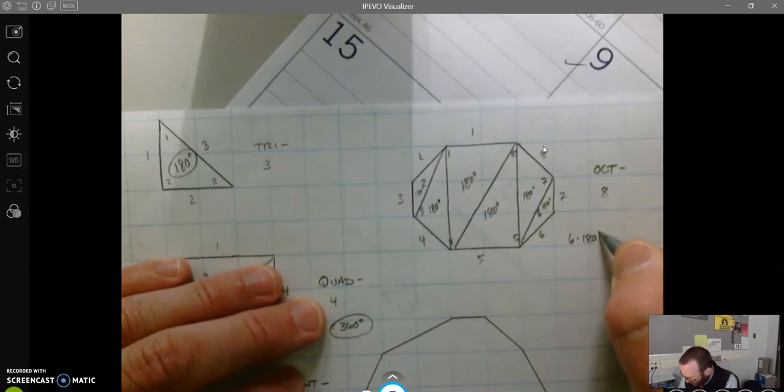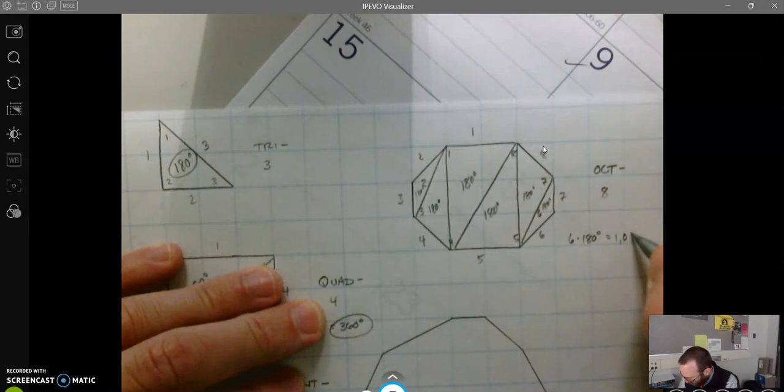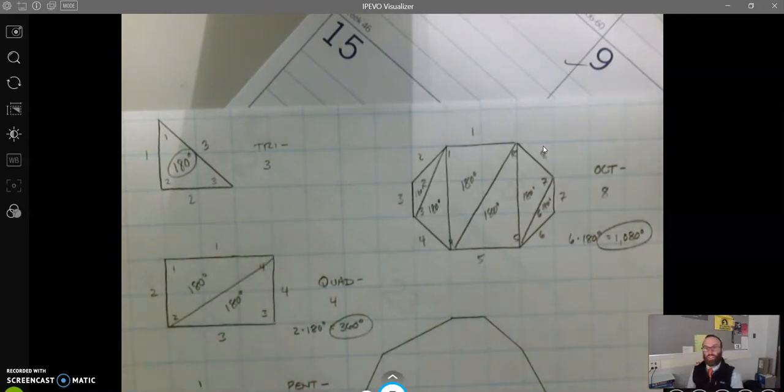Each with 180 degrees, giving us 1080 total interior degrees. That's the inside angles all add up to that.